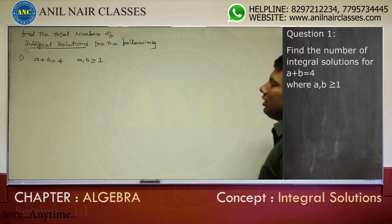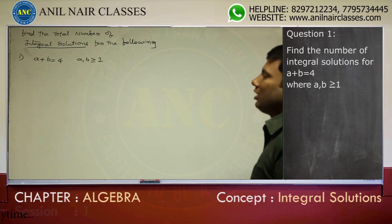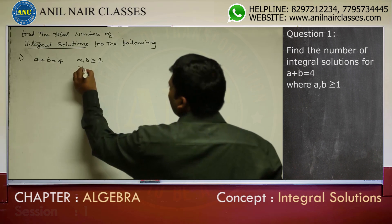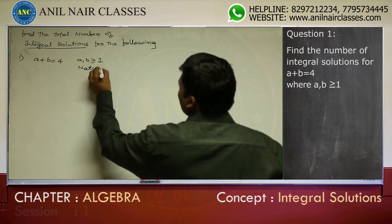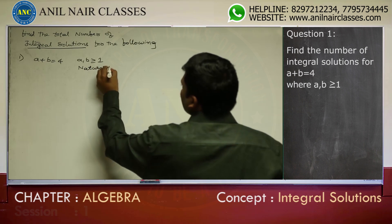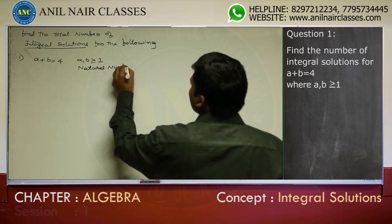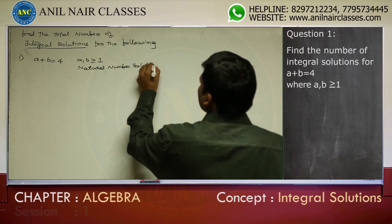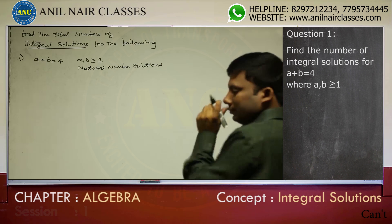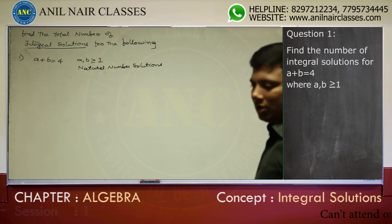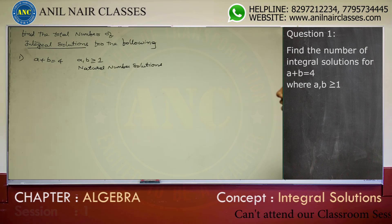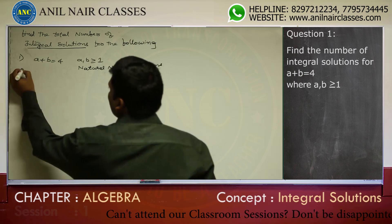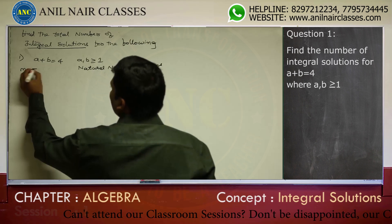I am finding the natural number solutions. Now see here, one method to solve is A plus B equal to 4.